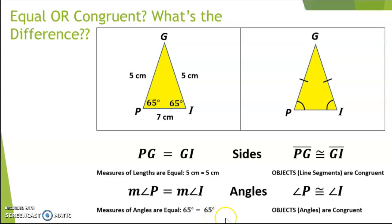In the other triangle, since I haven't been provided with a measurement, and I only have these markings in the corners of angle P and angle I, I would instead say that the objects, angle P, and the object, angle I, are congruent to each other.